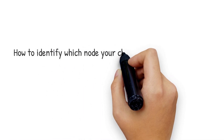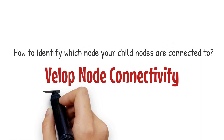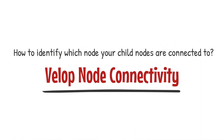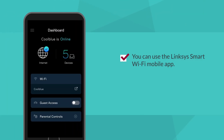How to identify which node your child nodes are connected to? You can use the Linksys Smart Wi-Fi mobile app to identify which node your child nodes are connected to.